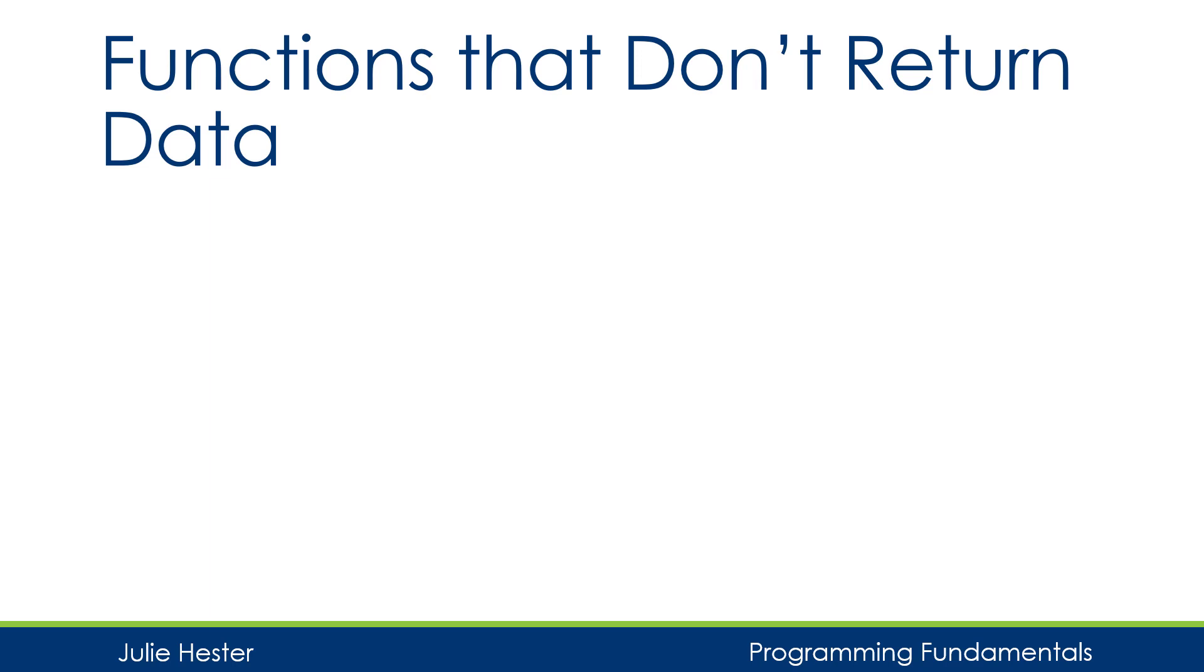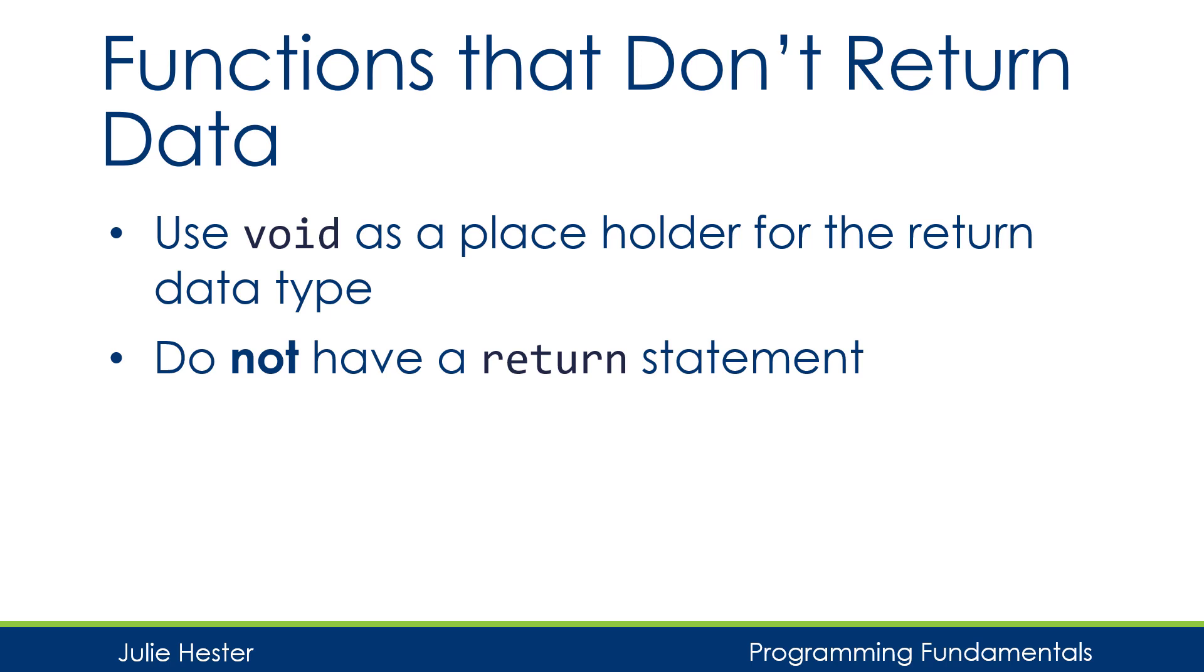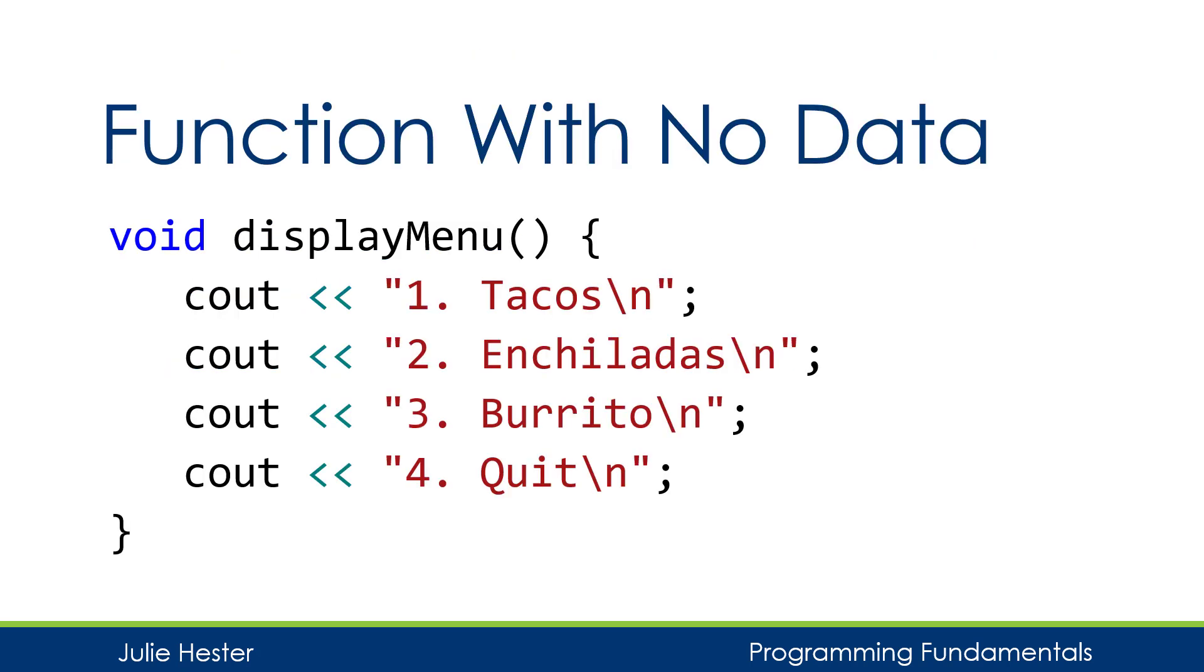Some functions don't return data. With these functions, we'll use void as a placeholder for the return data type. And we don't have to have a return statement, because we're not returning anything. So here's an example of a function with no data. This function is named displayMenu. It has no parameters. And void, out next to displayMenu, indicates that this function is not going to return any values. Inside the function body, it prints out four statements, and then it ends.